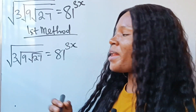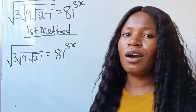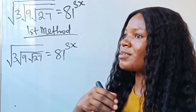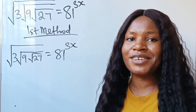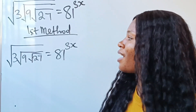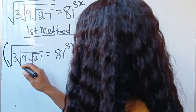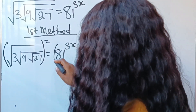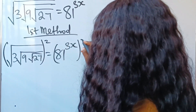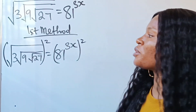Whenever I see a square root, the first thing that comes to my mind is to square it — square both sides to remove the square root. So we are going to square both sides of this equation.